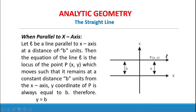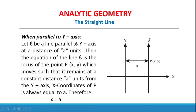When parallel to x-axis: let line L be a line parallel to the x-axis at a distance of b units. We have a line that is parallel to the x-axis at distance b from the origin. The equation of line L is the locus of point P(x, y) which moves such that it remains at a constant distance b units from the x-axis. The y-coordinate of P is always equal to b, therefore the equation of line L is y = b.